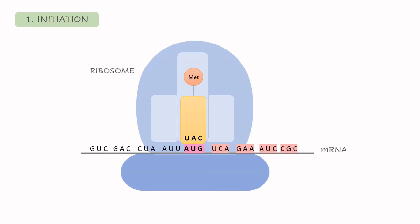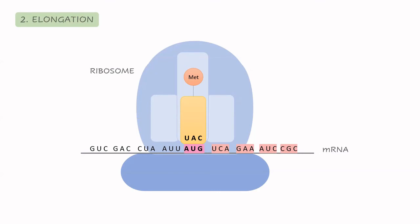Now we step into the elongation process. The A site attracts the transfer RNA that has the anticodon complementary to the following codon — in this case encoding for serine. Each transfer RNA contains three bases called the anticodon, because they are complementary to the codon that encodes for the amino acid. The transfer RNA attaches to the A site, and then the serine and the methionine interact and form a bond.